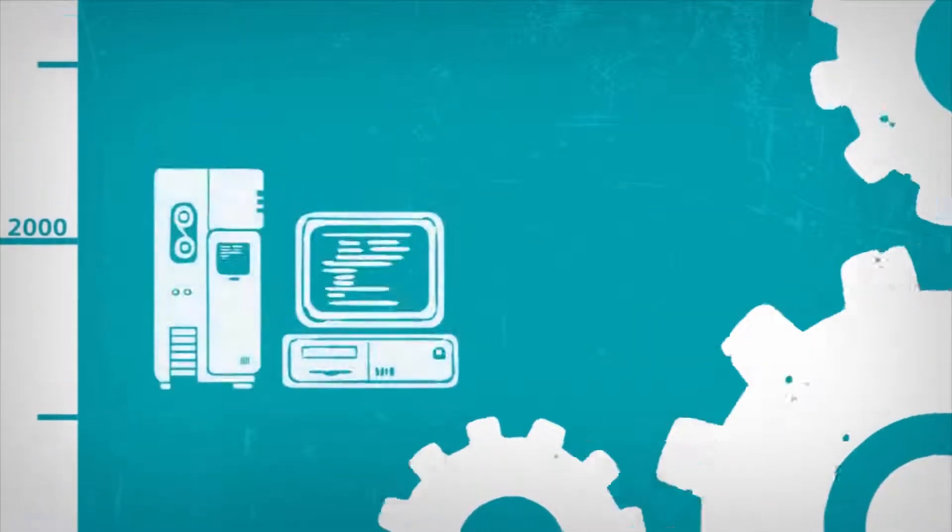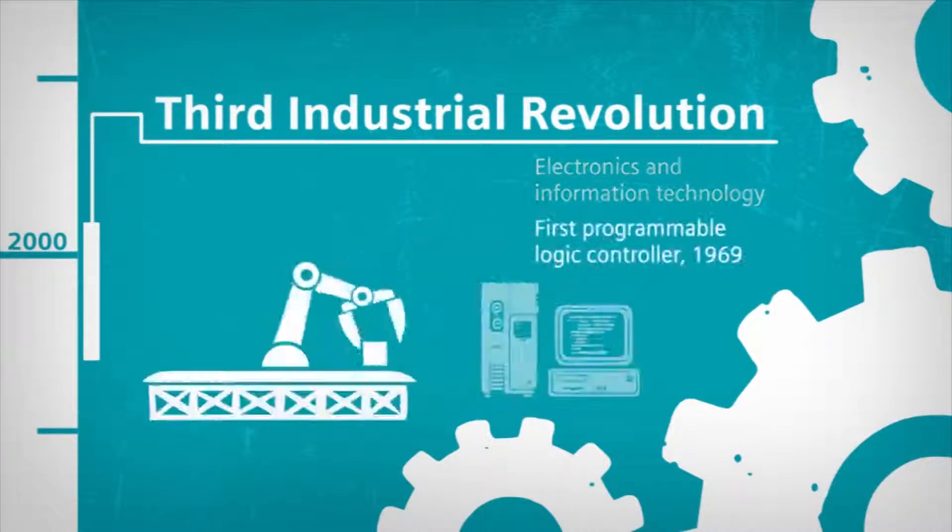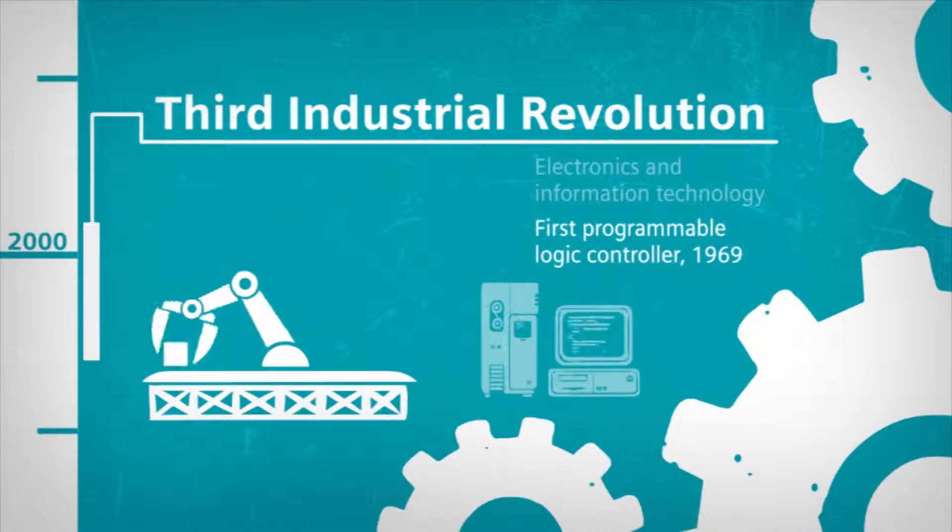In the mid-1970s, electronics and IT began to expand rapidly into industry. Siemens developed the first SIMATIC. Production became increasingly based on computer-assisted controls.